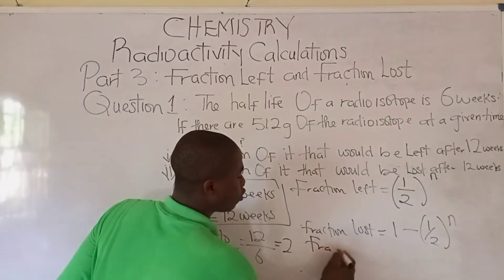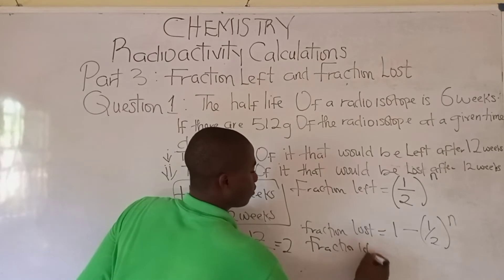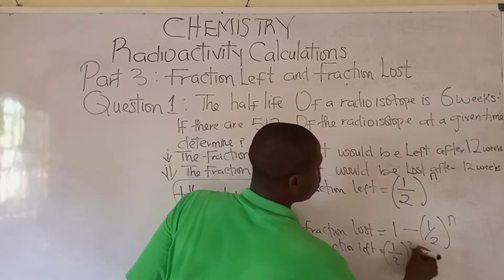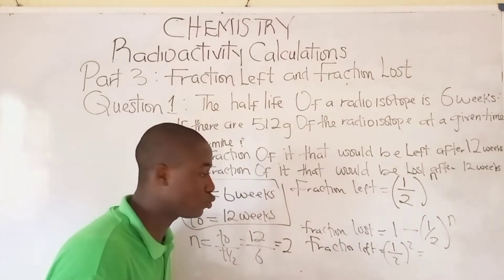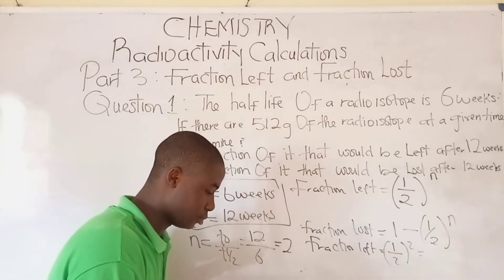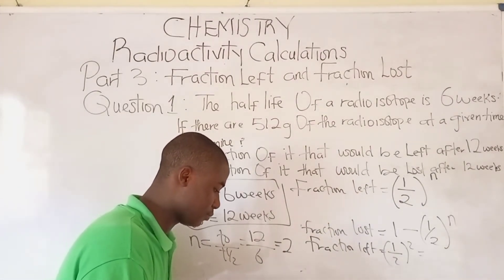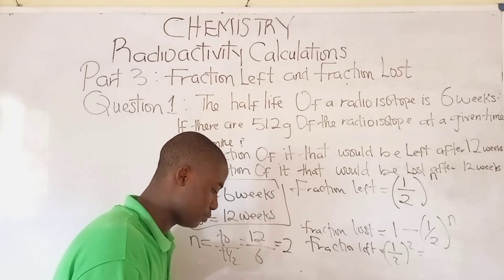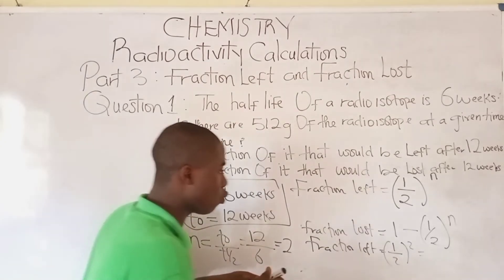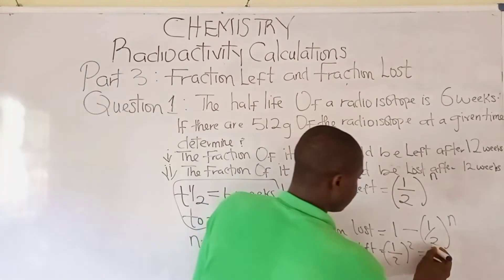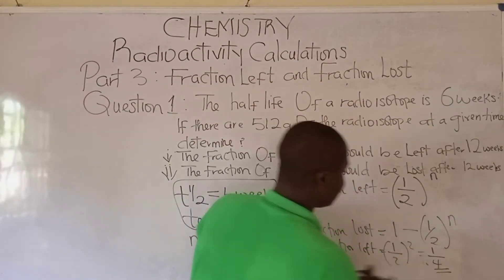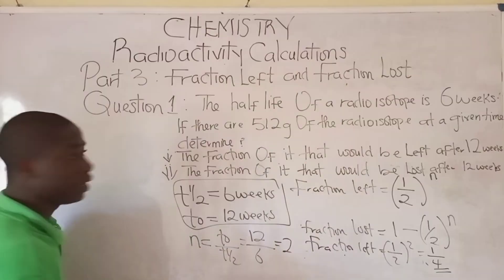What becomes the fraction left? It is equal to 1 over 2 raised to the power of 2, which equals 1 over 4. This is the fraction left.